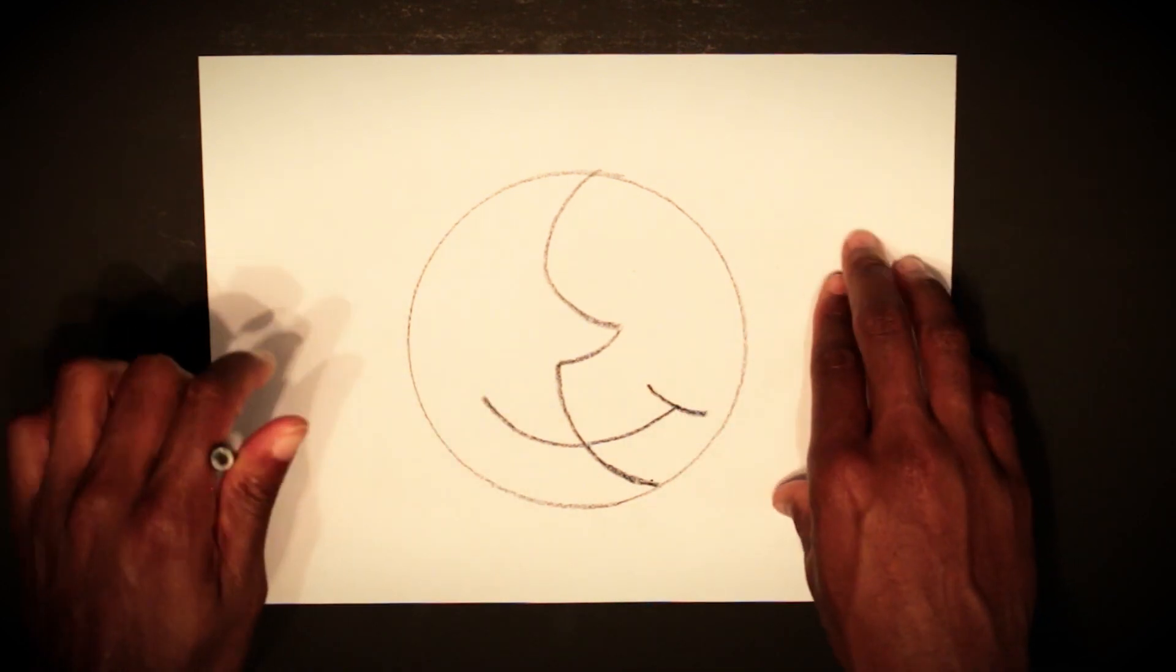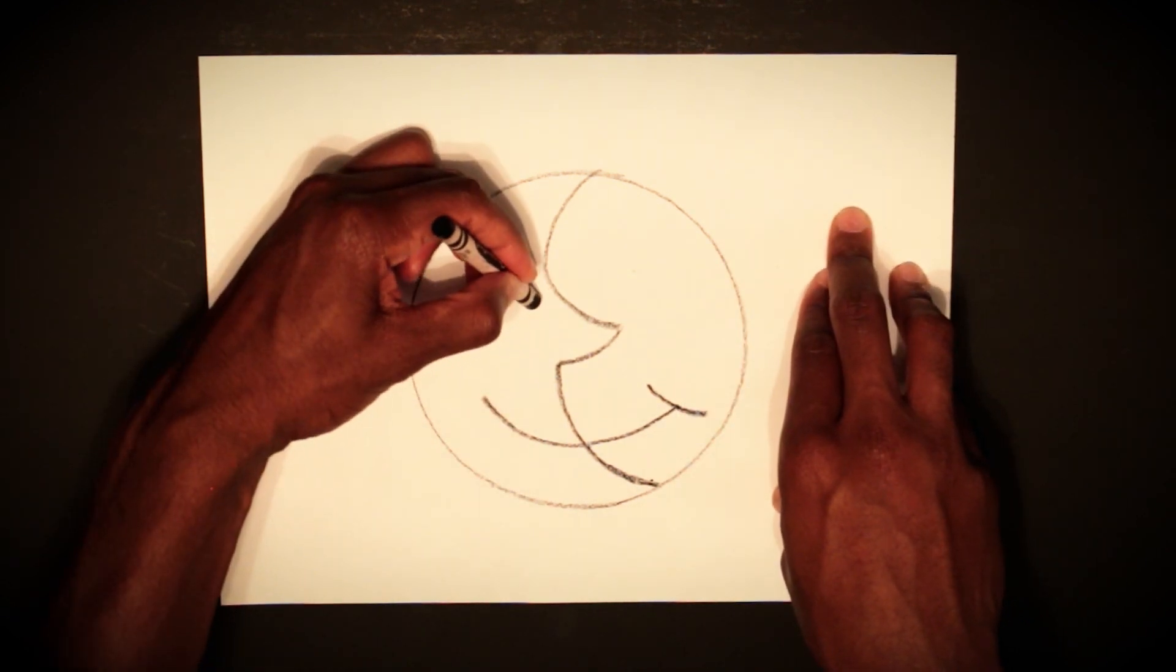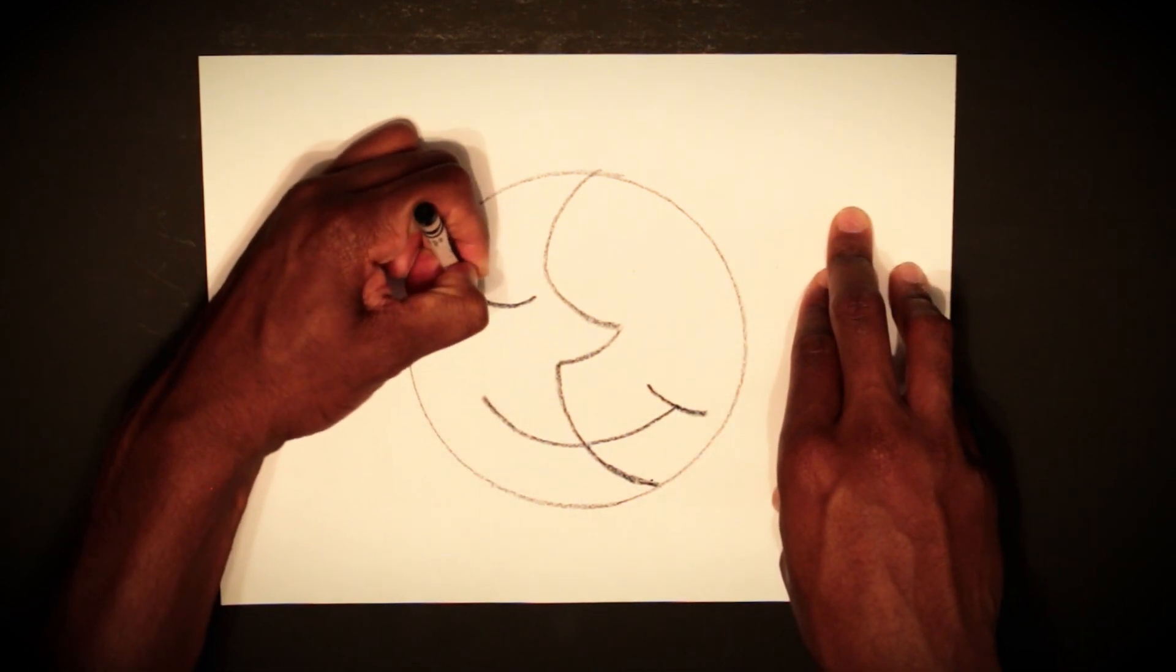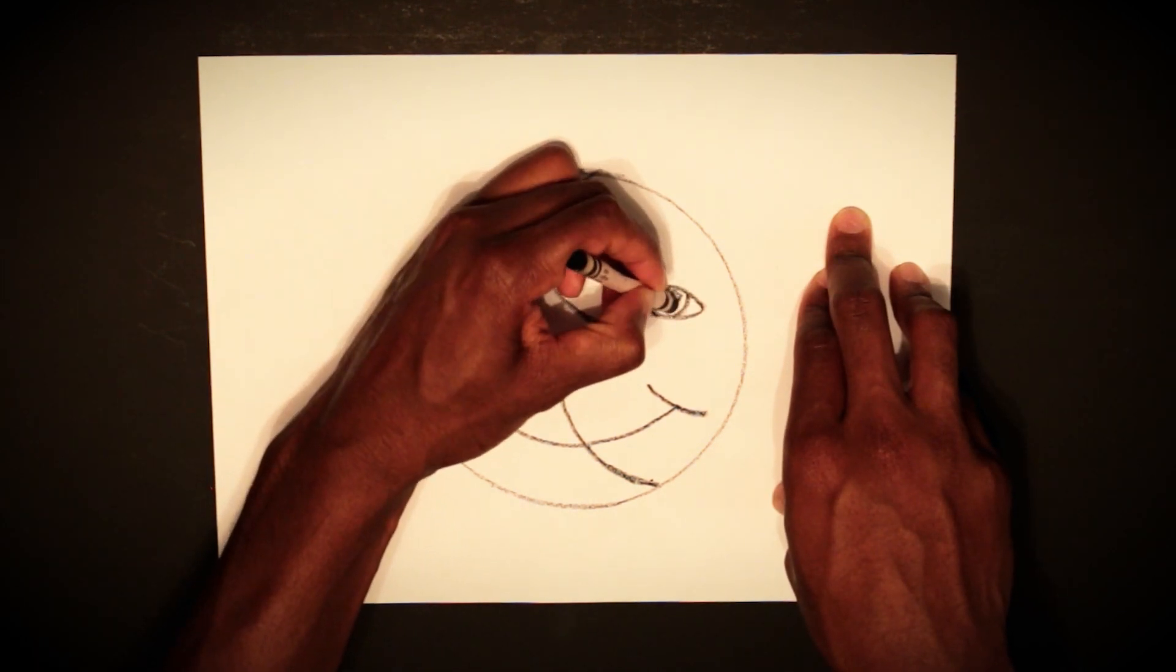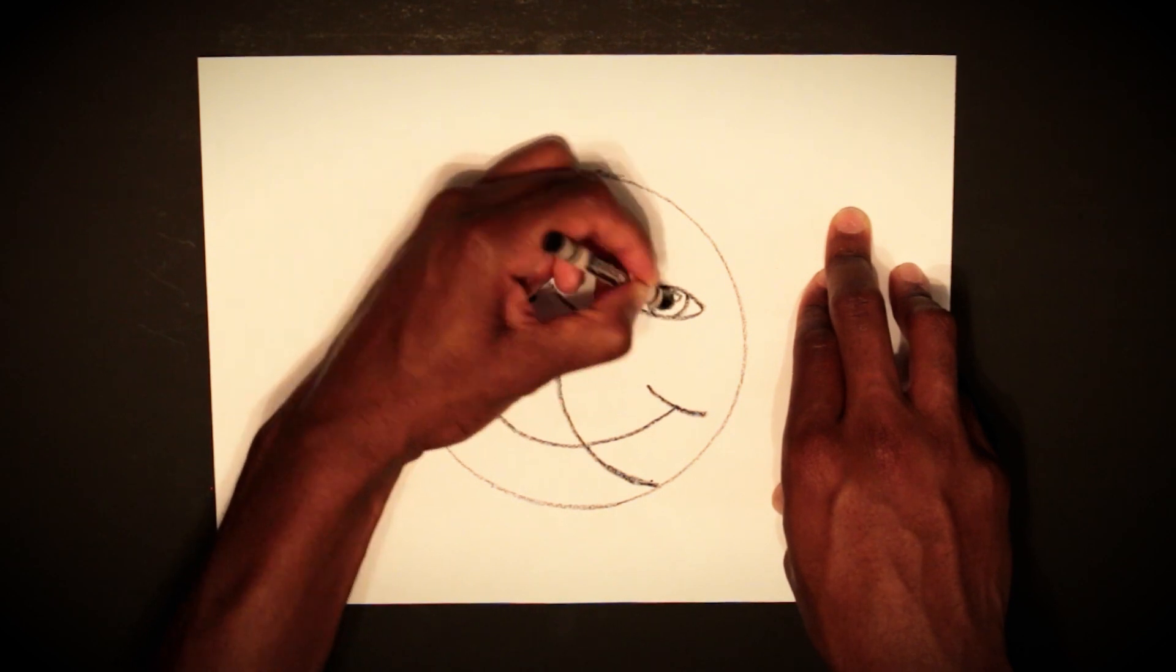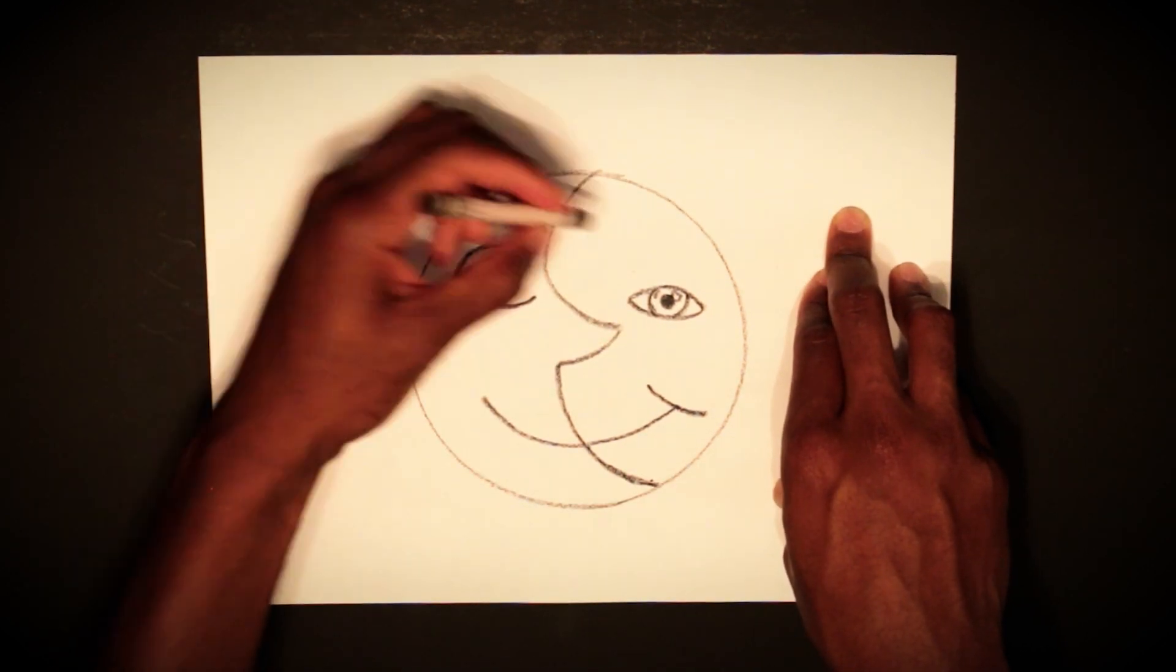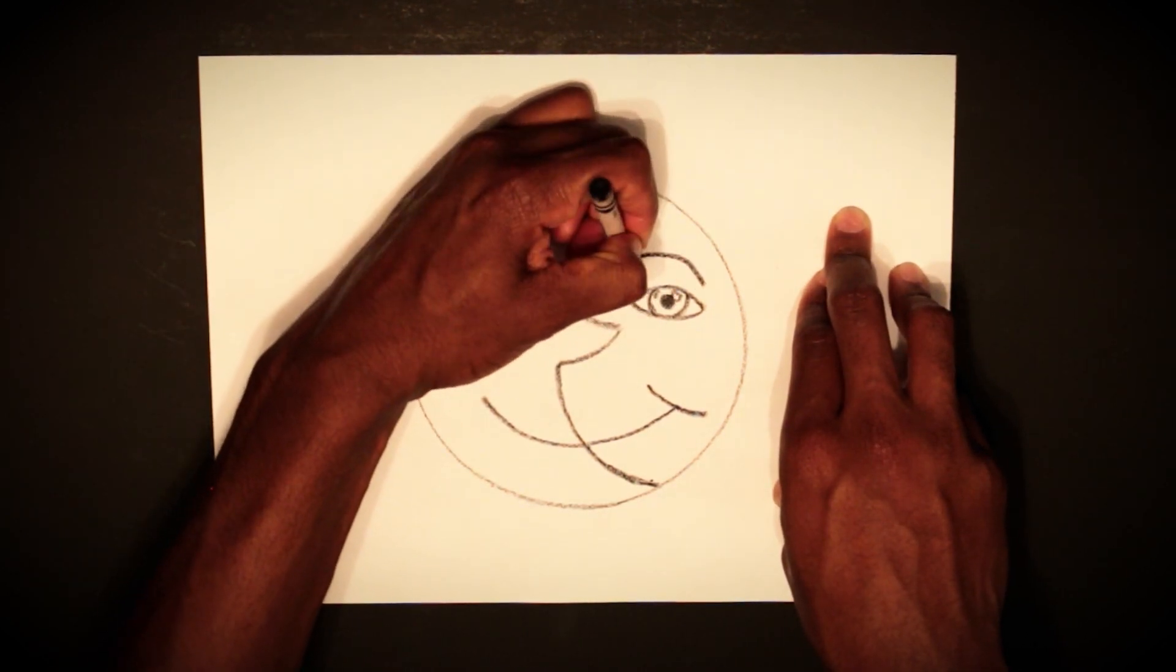So let's work on our eyes now. The moon will be sleeping so we'll do half of the eye. And then you can do an open eye for your sun. Just give it a little bit of character. Then we'll do some eyebrows also for expression.